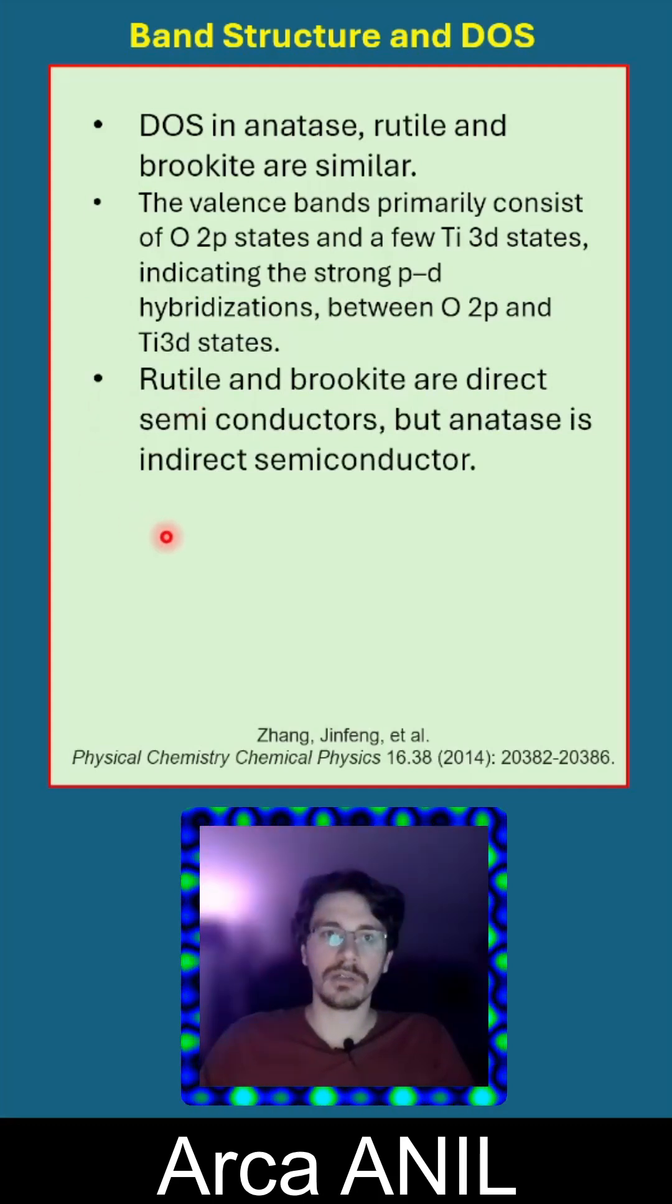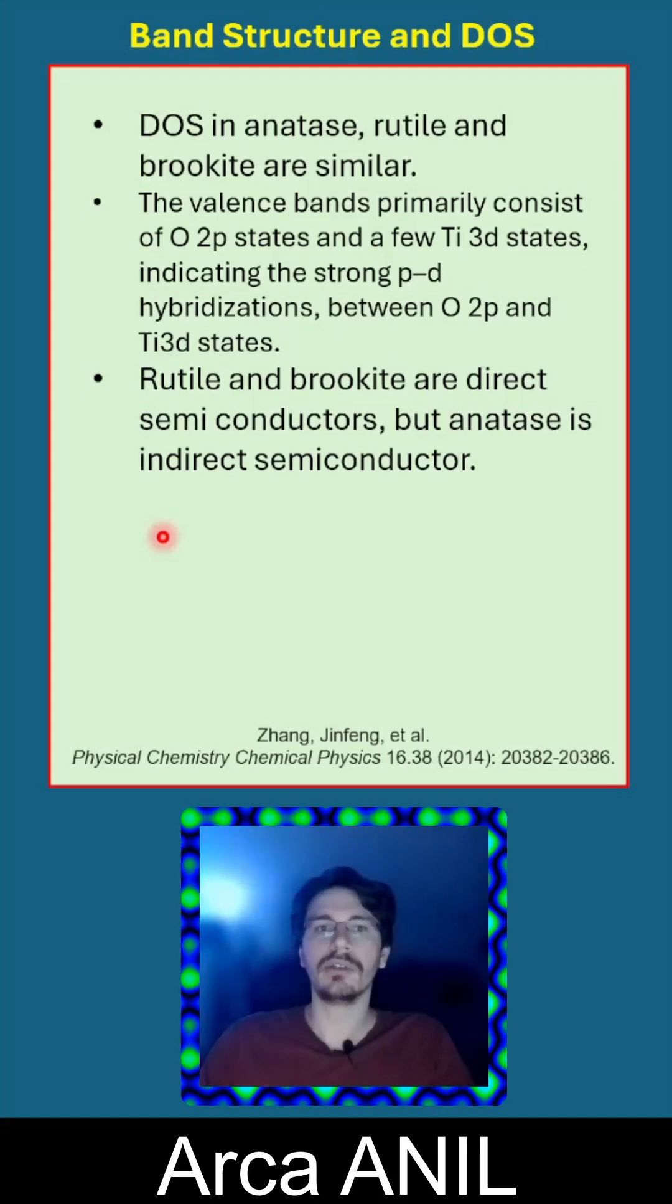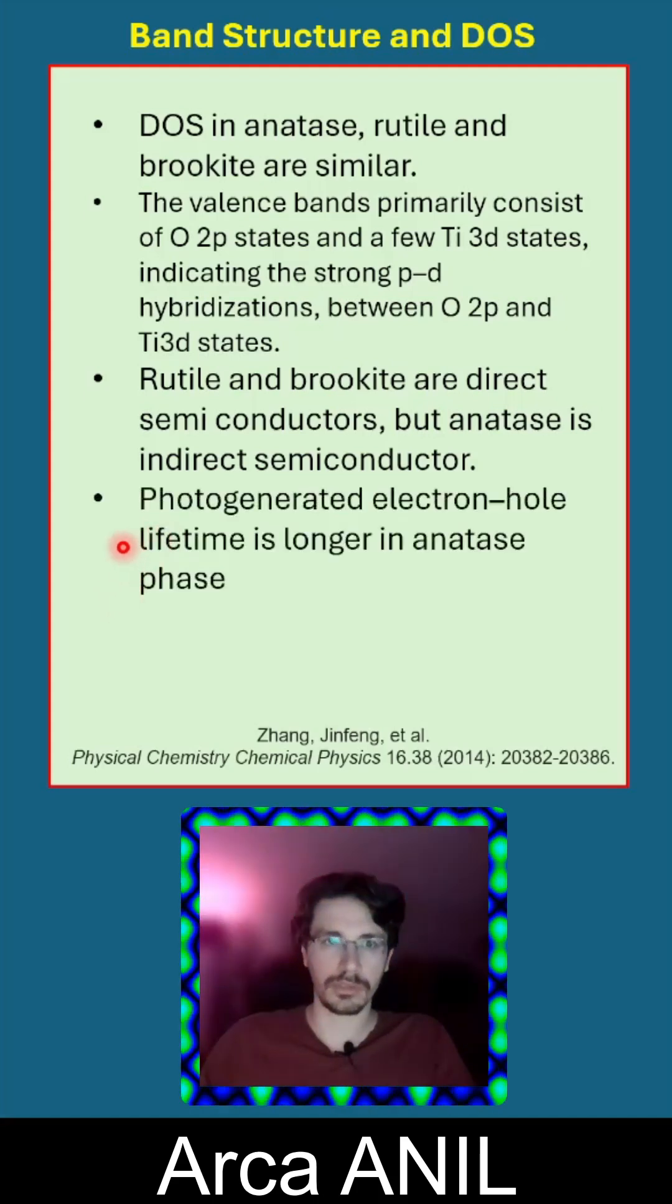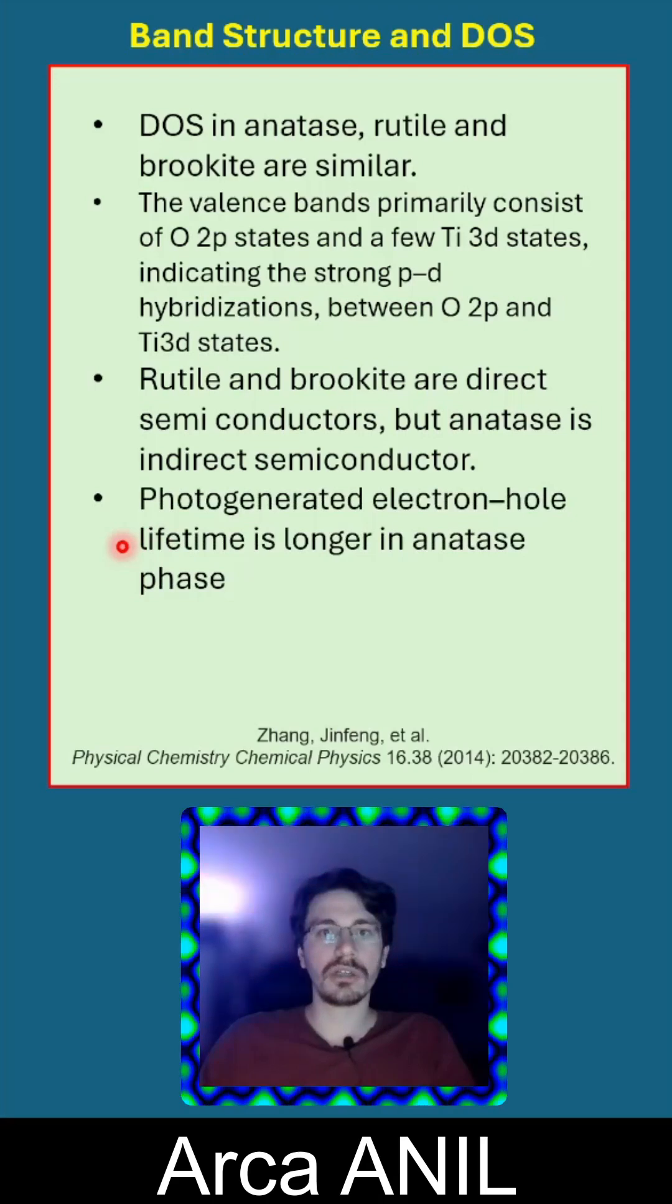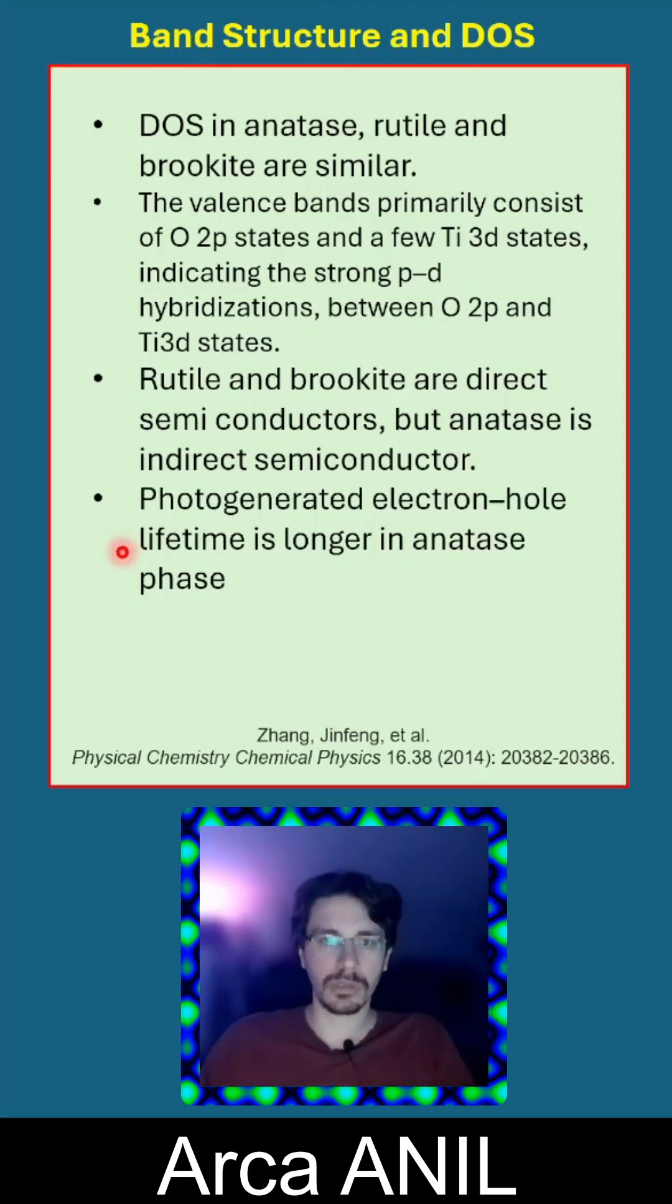Rutile and brookite are direct semiconductors, but anatase is an indirect semiconductor, which is very important for photocatalysis. Photogenerated electron-hole lifetime is longer in the anatase phase.